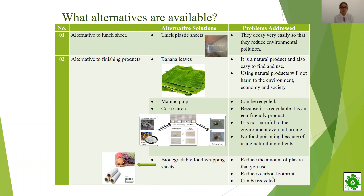Manioc pulp and cornstarch can also be used as an alternative. They are recyclable, making them eco-friendly products. Especially, there won't be any food poisoning. When we use lunch sheets to wrap food, sometimes the chemicals react with food, creating a possibility of food poisoning. Even if the food reacts with these alternatives, there won't be a problem because the ingredients are natural. By using biodegradable food wrapping sheets, it will reduce the amount of plastic used and also reduce the carbon footprint. These are recyclable, so they reduce environmental pollution as well.